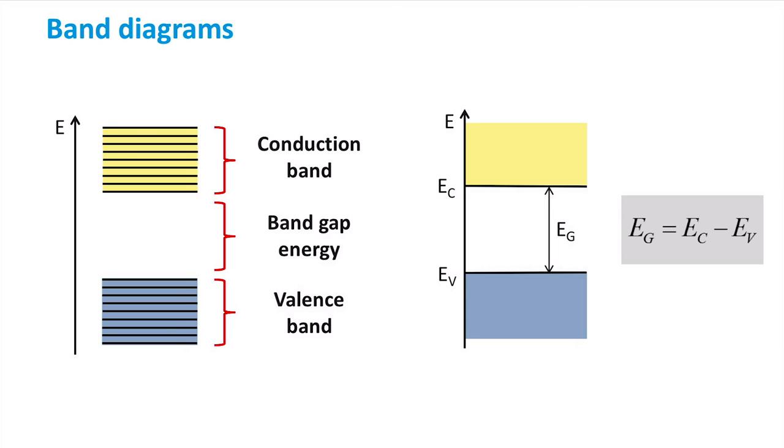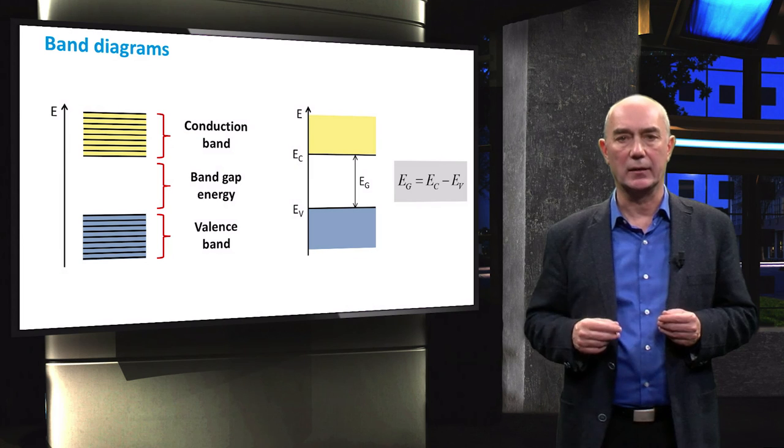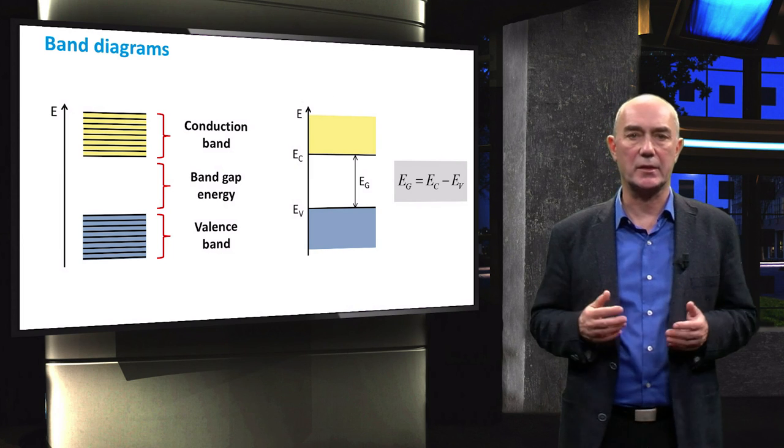We can also define the band gap, which we denote as Eg, as the difference between the bottom edge of the conduction band (Ec) and the top edge of the valence band, which we denote Ev. We will use this diagram over and over again throughout this video series.